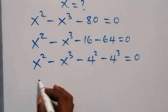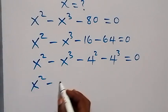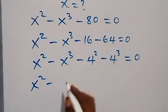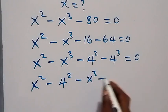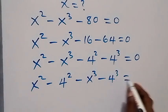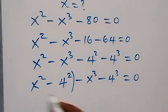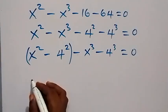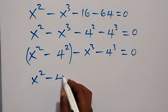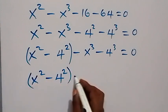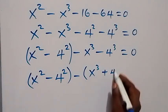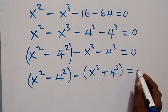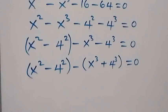From here, let's bring the powers together: we have x squared minus 4 squared, then minus x cubed minus 4 cubed, which equals 0. We can group these together, and factoring out the minus we have x squared minus 4 squared in brackets, then minus x cubed plus 4 cubed, equals 0.